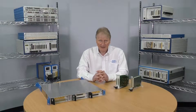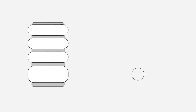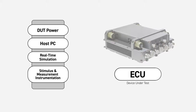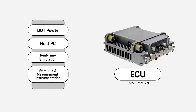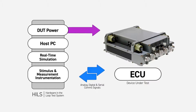Ensuring these demands are met requires significant investment in test and documentation. Typically, ECUs under development are exercised by a test system which simulates the real-world environment in which the ECU will operate. This is known as a hardware-in-the-loop simulation, or HILS. Stimulus instrumentation simulates the ECU's sensor inputs, and measurement instrumentation is used to capture and verify the ECU control outputs.